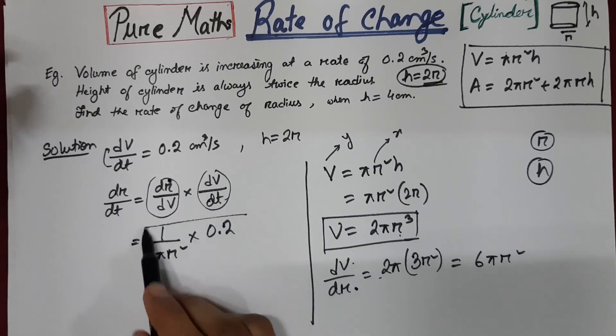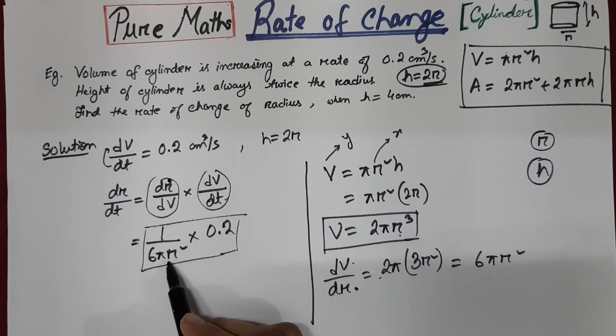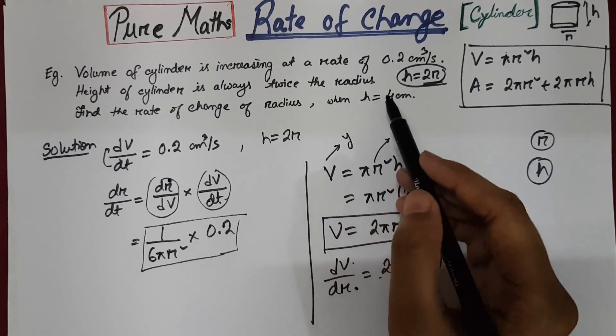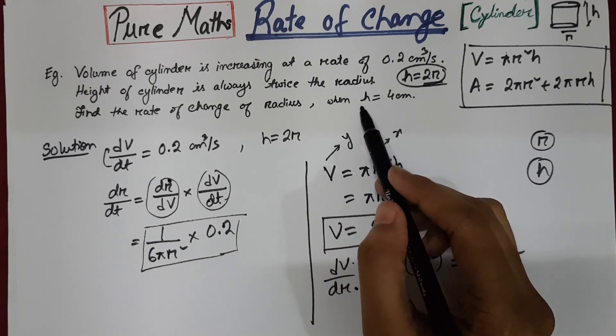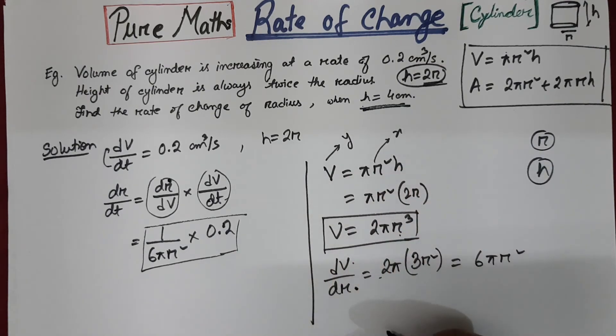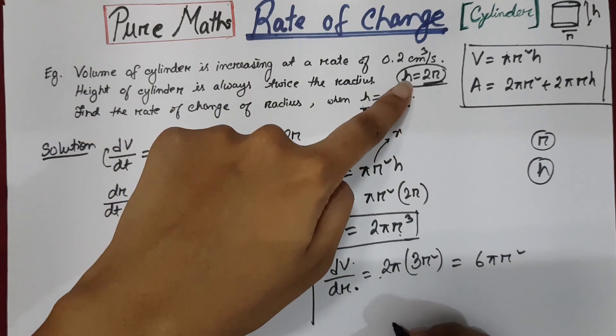So at this position, we need to replace the value of radius. But the question provided you the value of height. So since you know h equals to 2r.